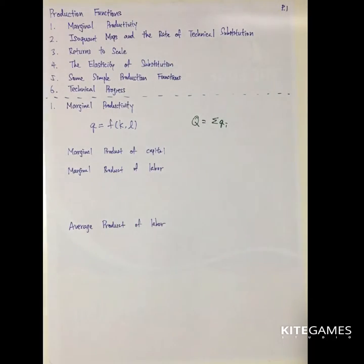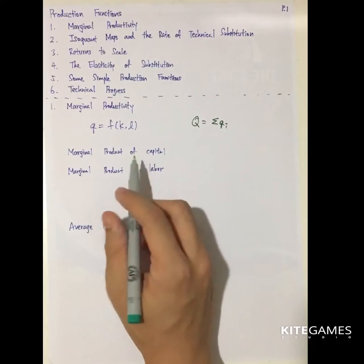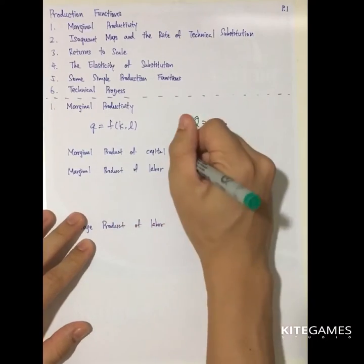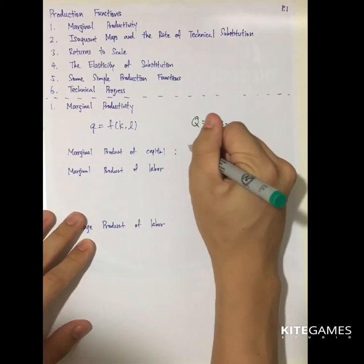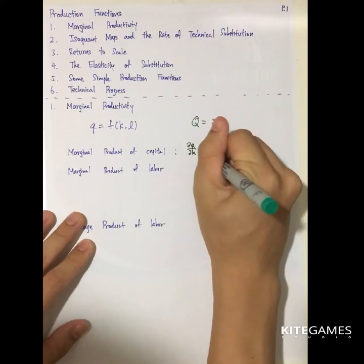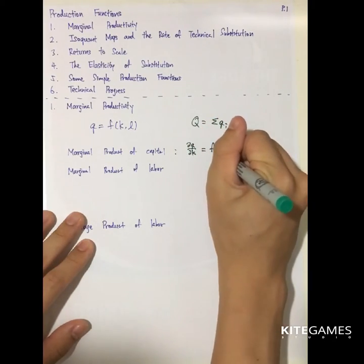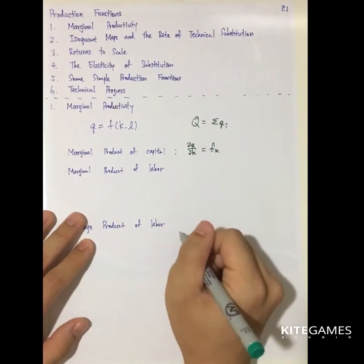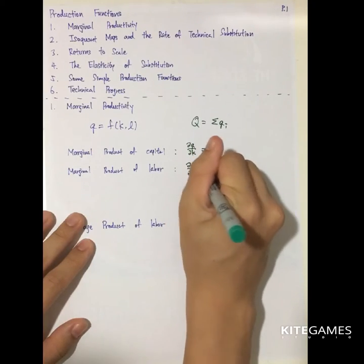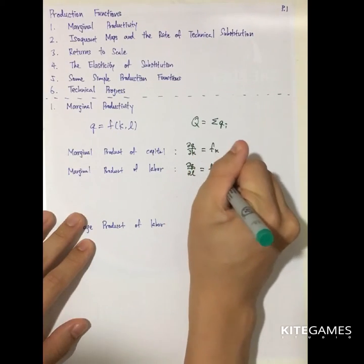This is the most basic production function in economics. The marginal product of capital means the increase in output if I increase the number of capital by one unit. Mathematically, this is equal to partial Q partial K, or we call this F sub K. The marginal product of labor is partial Q partial L, or F sub L.